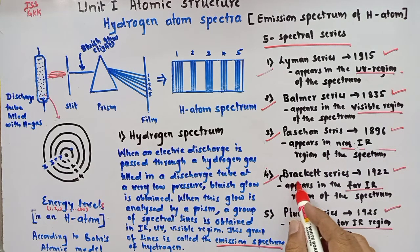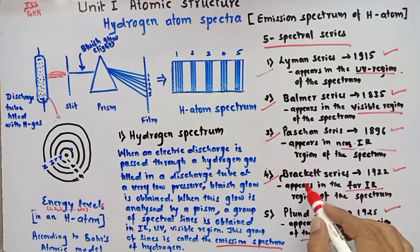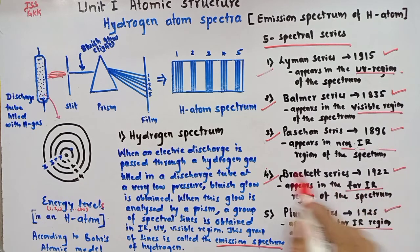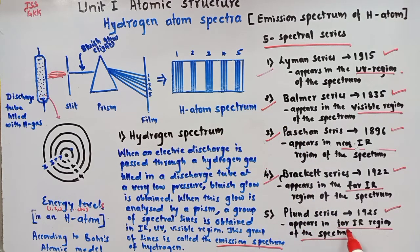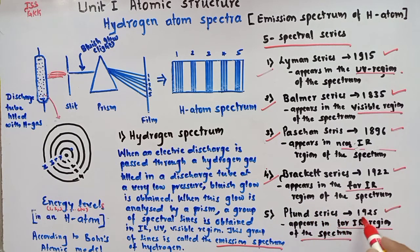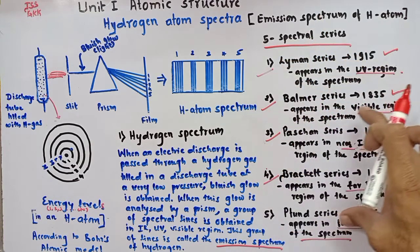The next group is the Brackett series. Brackett series of spectral lines were discovered by Brackett in the year 1922, and these spectral lines appear in the far infrared region of the spectrum. The last one is the Pfund series, whose spectral lines are observed in the far infrared region of the spectrum. These Pfund series of spectral lines were discovered by Pfund in the year 1925. One more series exists — the Humphreys series — but we are going to restrict ourselves to only these five series of spectral lines.